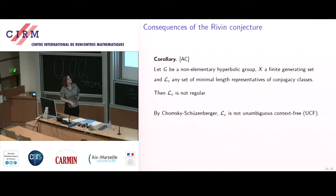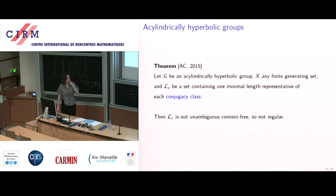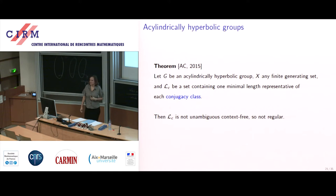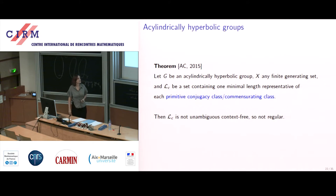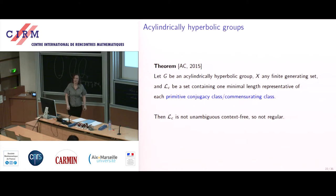This is relevant because the Riven conjecture says the conjugacy growth series is transcendental. If we are counting a language and get a transcendental growth series, then by Chomsky–Schützenberger it cannot be a UCF language. So the Riven conjecture for hyperbolic groups tells us: the language of conjugacy representatives is not regular and not even UCF. We prove the same for acylindrical hyperbolic groups.